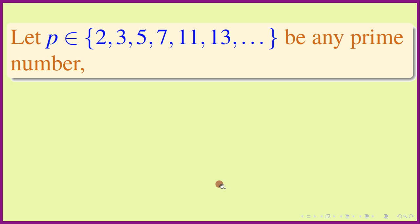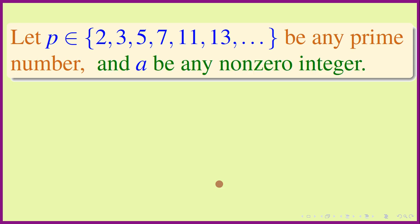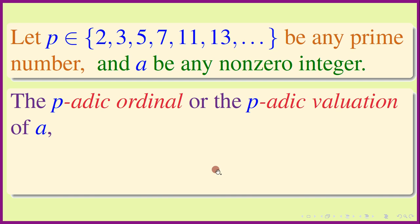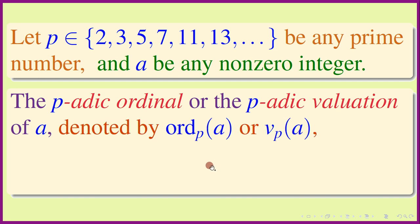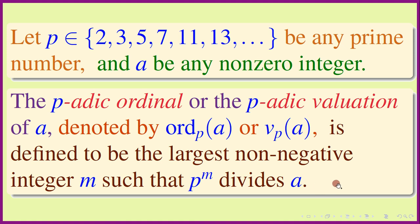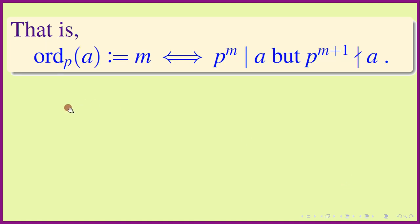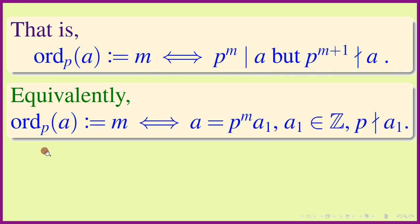Let p be any prime number and a be any non-zero integer. The p-adic ordinal, or the p-adic valuation of a, denoted by v_p(a), is defined to be the largest non-negative integer m such that p^m divides a. That is, the p-adic valuation of a is m if and only if p^m divides a but p^(m+1) does not divide a. Equivalently, v_p(a) = m if and only if a = p^m · a₁ where a₁ is an integer and p does not divide a₁.